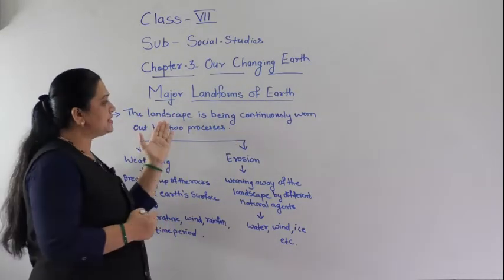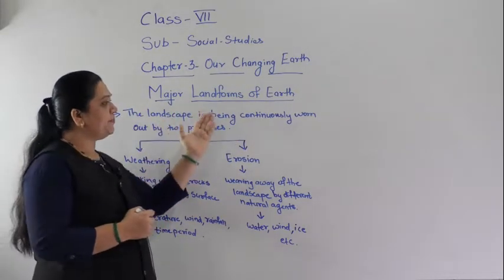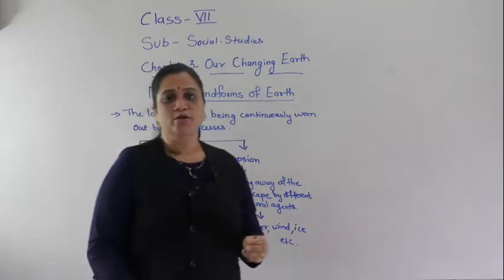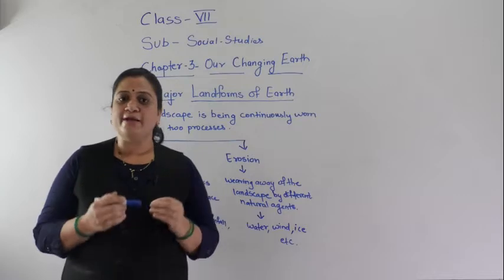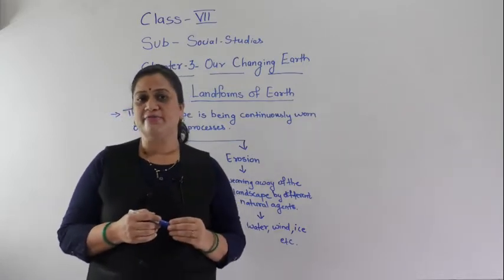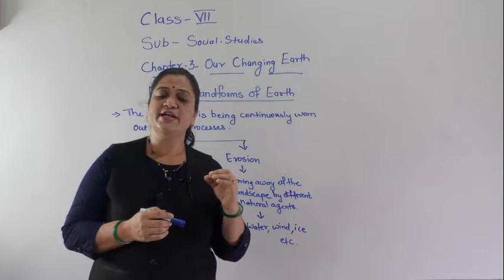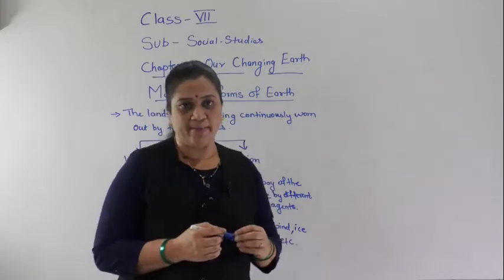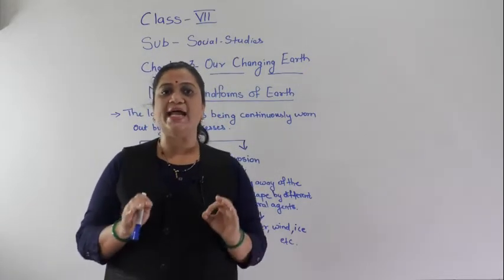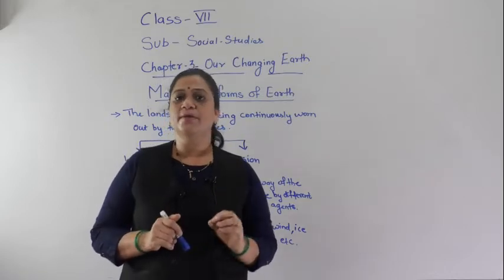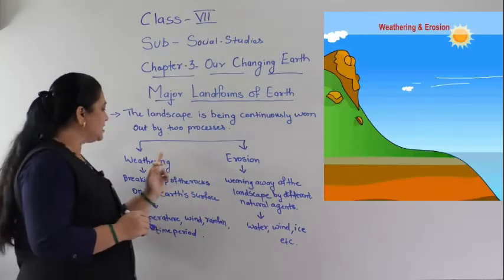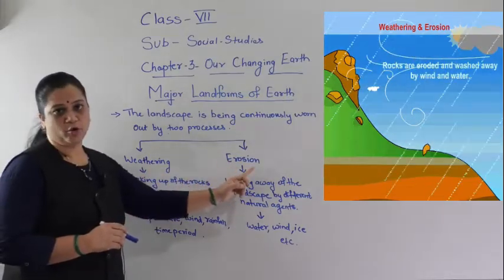The landscape is being continuously worn by two processes. The landforms which are formed on the earth's surface have different agents working with them. The continuous wearing out of the landscape is done by two processes known as weathering and erosion.